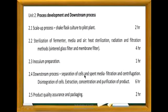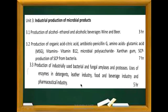Unit 2.3 is inoculum preparation. Unit 2.4 covers downstream processing: separation of cells and spent media by filtration and centrifugation, disintegration of cells, extraction, concentration and purification of product. Unit 2.5 covers product quality assurance and packaging. This completes Unit 2.